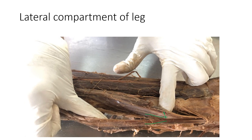Peroneus longus is inserted into the first metatarsal, going across to form a lateral sling for the arch. Its action is eversion of the foot. Tibialis anterior is the inverter of the foot, while peroneus longus is the everter of the foot — this is a commonly asked sub-question in this region. That covers the spotters for the lateral compartment and anterior compartment of leg.